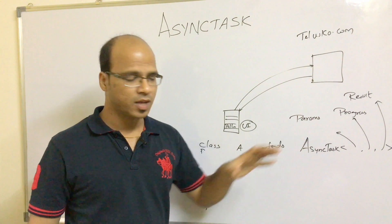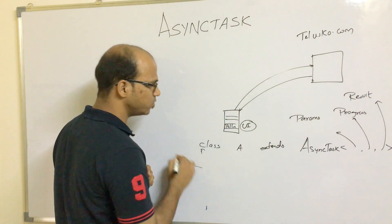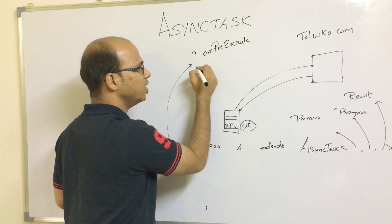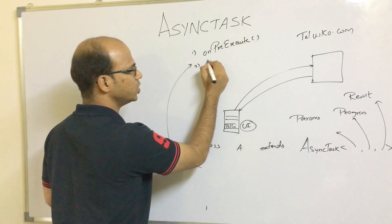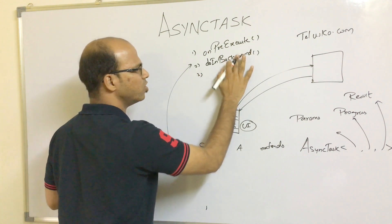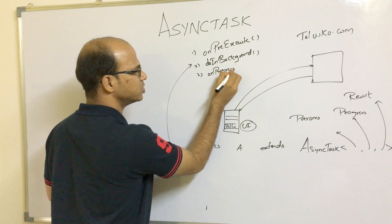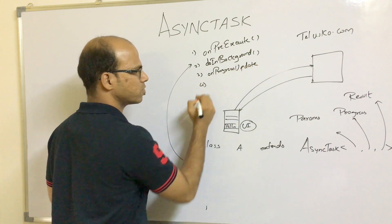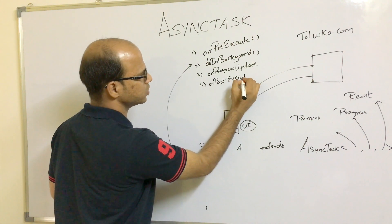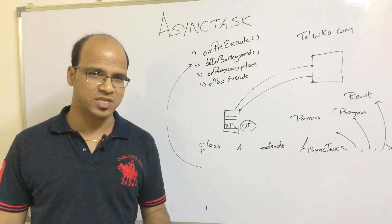When you work with AsyncTask, it will ask you for four methods. The first method is onPreExecute. The second method is doInBackground. The third one is onProgressUpdate. And the fourth one is onPostExecute. So we have these four methods.